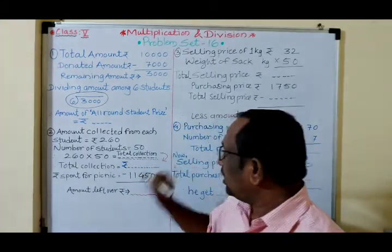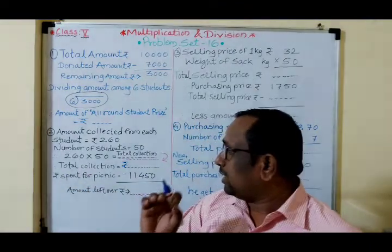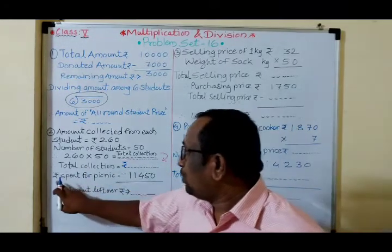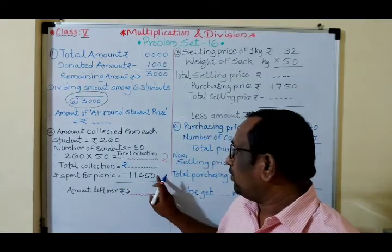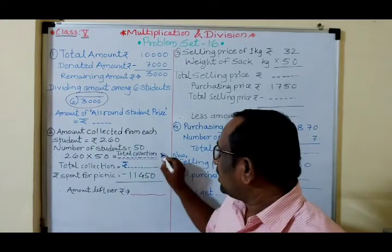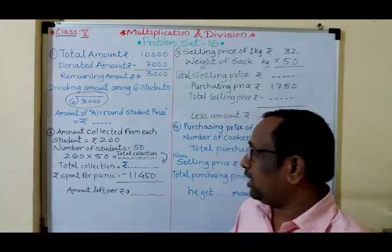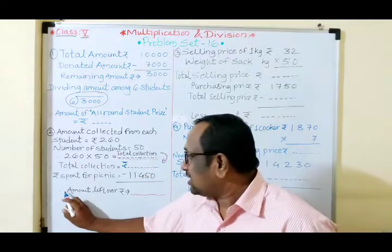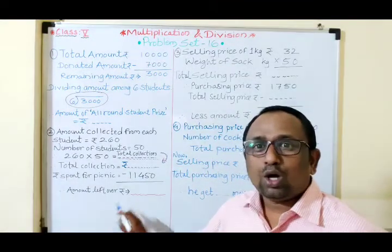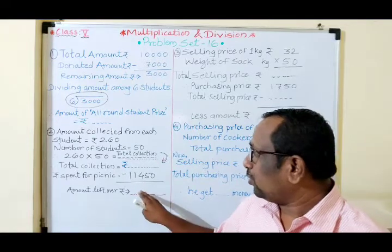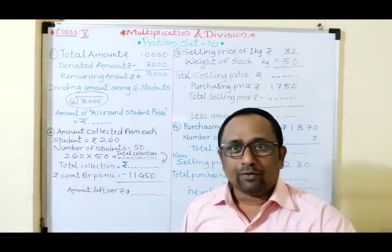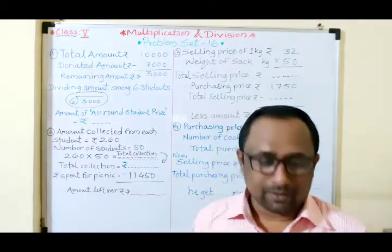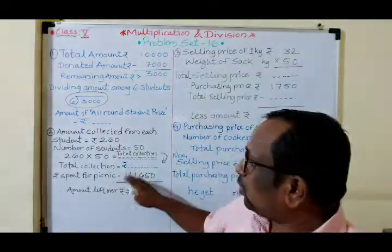Now we have to find the amount left over. Take the total collection amount you found from the multiplication, then subtract ₹11,450 spent for the picnic. Total collection minus ₹11,450 — do this subtraction. Whatever you get is the amount left over. Write: 'Therefore, amount left over is ₹___.' This is the money remaining after the picnic expenditure.